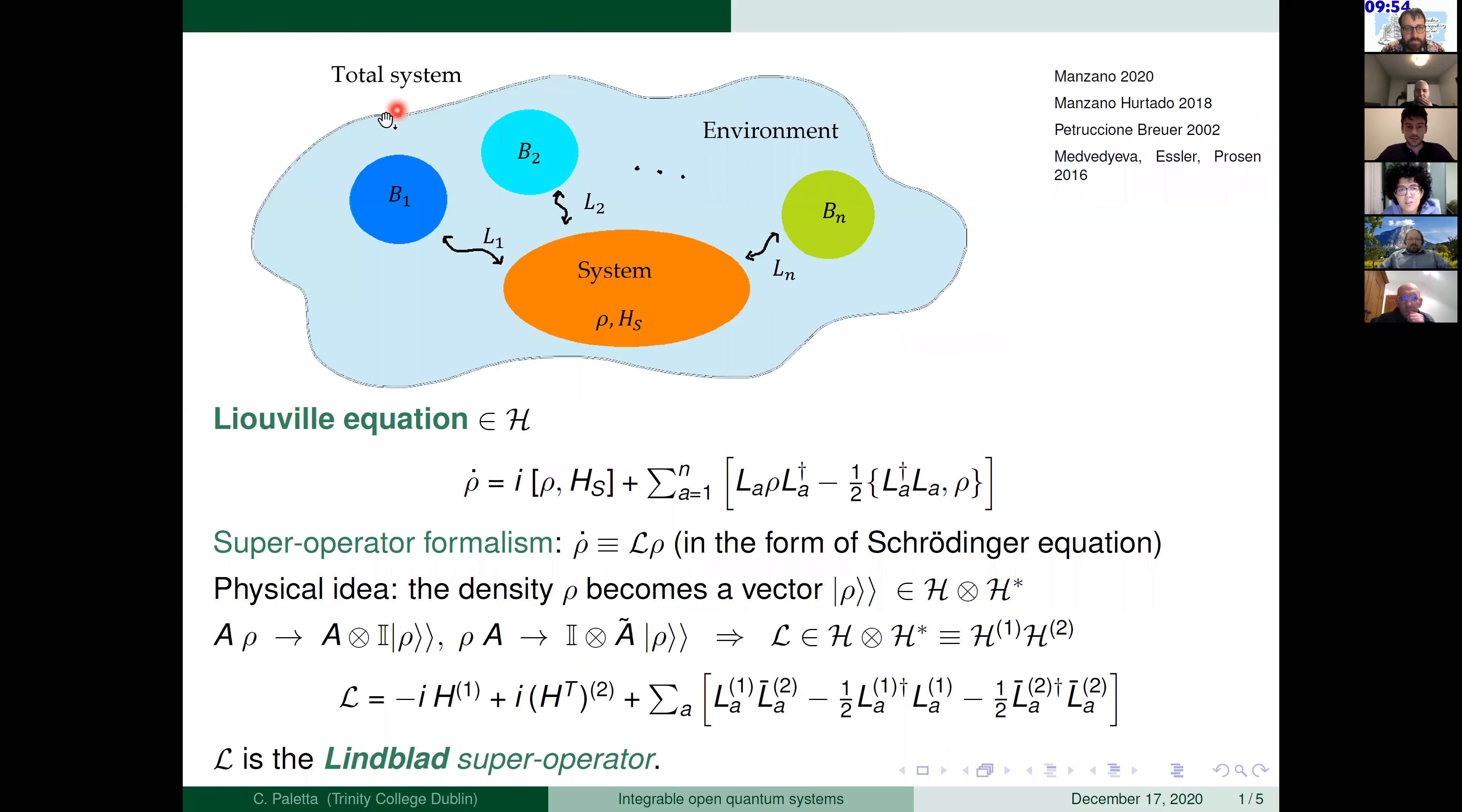First, let me introduce what is an open quantum system. So since in nature anything can be isolated, we are looking for a nice way to describe the evolution of a system that is coupled with some environment. The system we are interested in is the orange in the picture that is characterized by a density matrix ρ and a Hamiltonian that I identified with H_S.